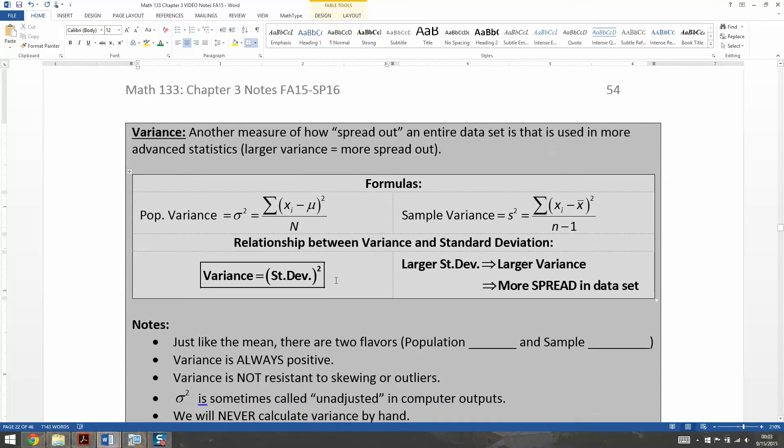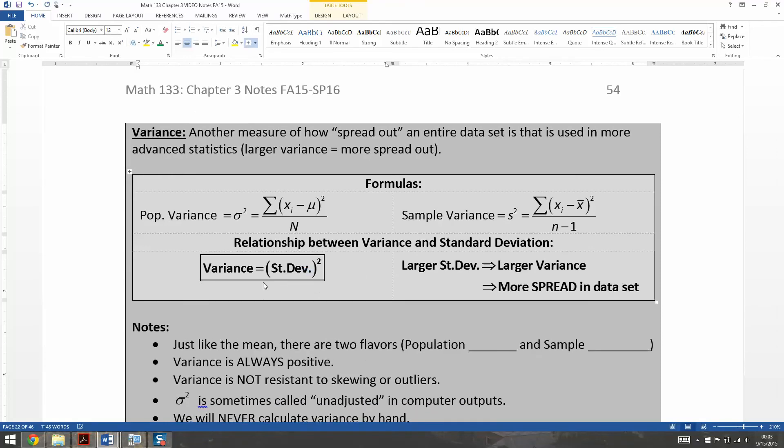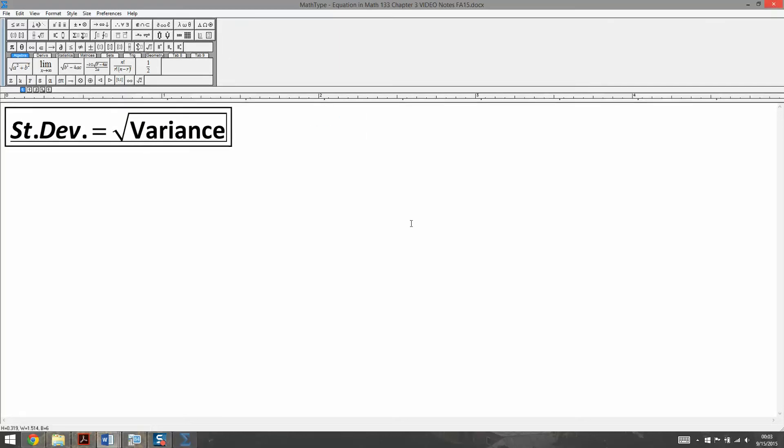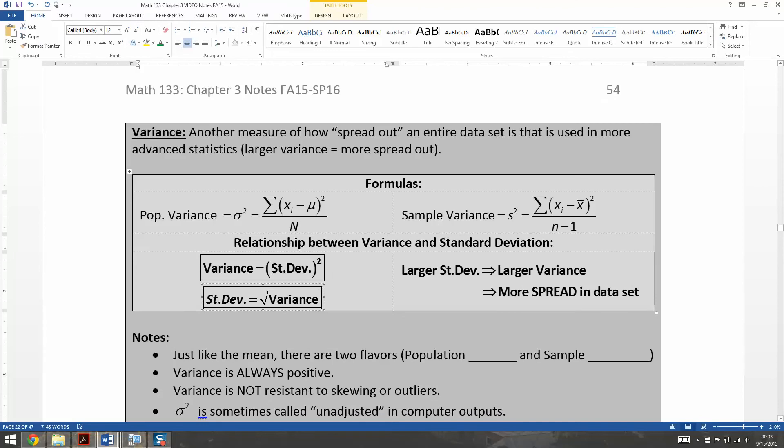Keep in mind also that this also means another thing. That the standard deviation is the square root of the variance, right? So if I take this, that's the standard deviation. It's the square root of your variance. So you can go both directions with that. So you might have to go take your standard deviation, square it, and find your variance. Or you might have to take your variance, take the square root of it, and find your standard deviation. So both of those are pretty useful little tips to have.